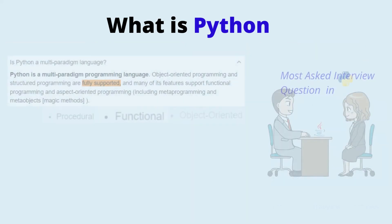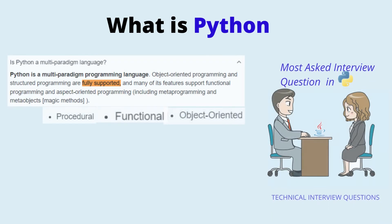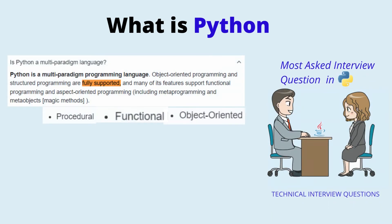Python is a multi-paradigm language because it supports different styles of writing code. One can write Python code in procedural, object-oriented, functional, or imperative manner.